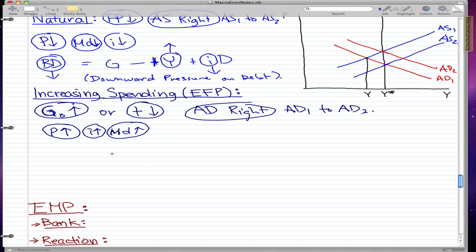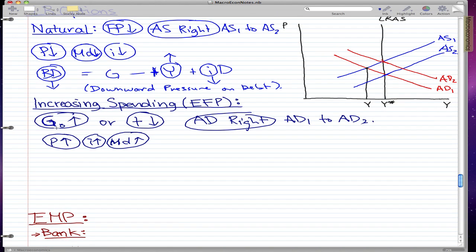And now, there are two cases we must consider. We must consider when government spends and when the tax rate falls. So let's go through the government spending first. So government spending increases. So what does this do to the budget deficit?